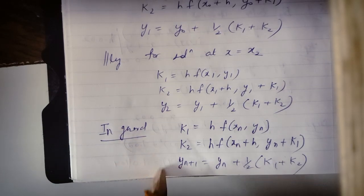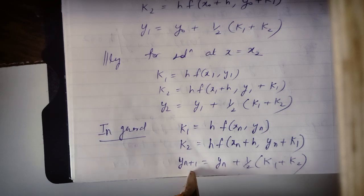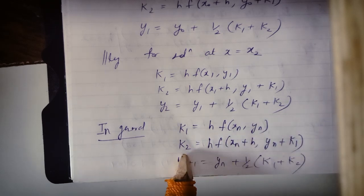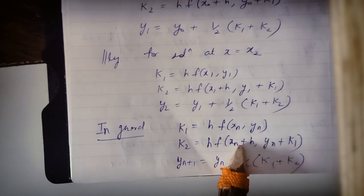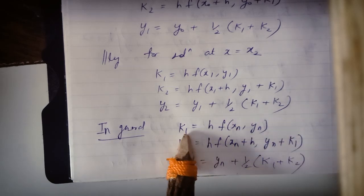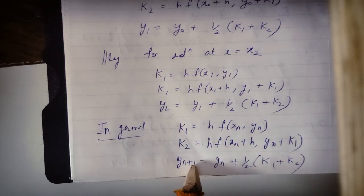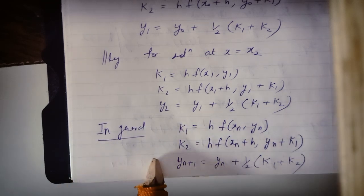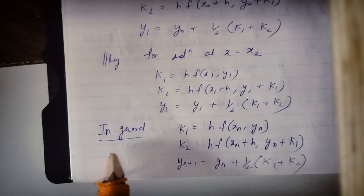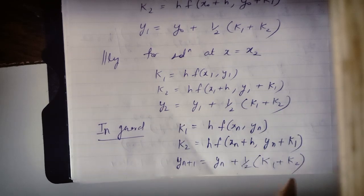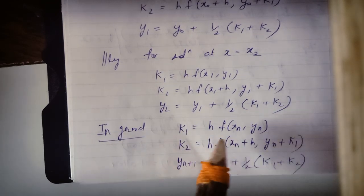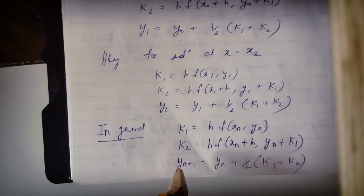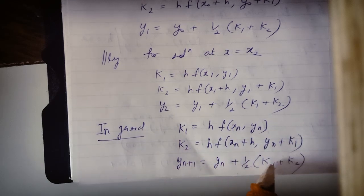So if I give you the general formula — this is the formula you need to remember: k1 equals h into f of xn, yn; k2 equals h into f of xn plus h, yn plus k1; and yn+1 equals yn plus half of k1 plus k2. This is the formula for Runge-Kutta method of order 2. In the exam, when asked to solve using RK method of order 2, these three equations must be memorized.